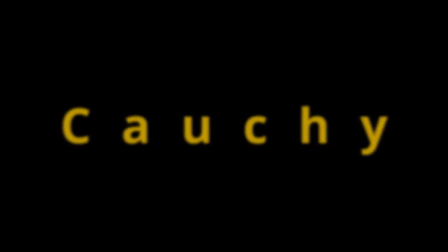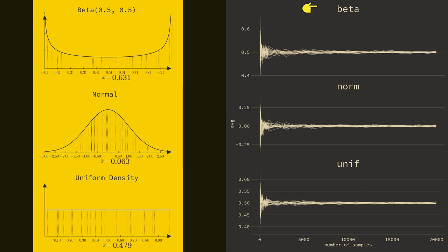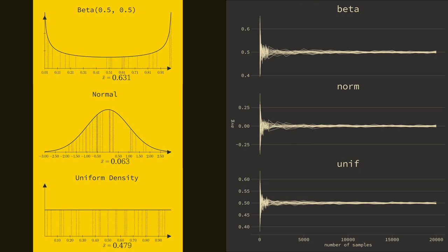I'm going to use some computer simulation to compare standard distributions to the Cauchy. Here are a few convergence plots. Each of these panes represent samples from different distributions. The x-axis represents the number of draws made from a distribution. The y-axis represents the mean of those samples.